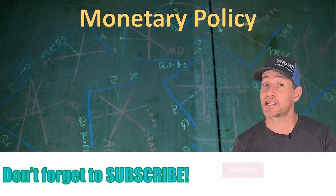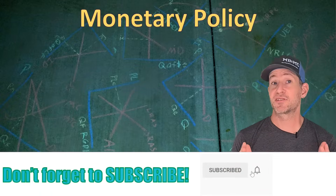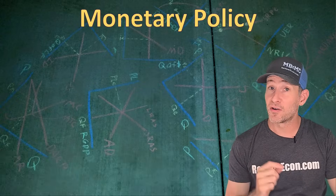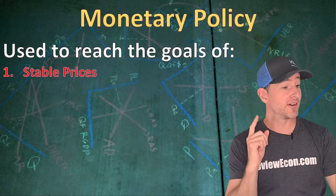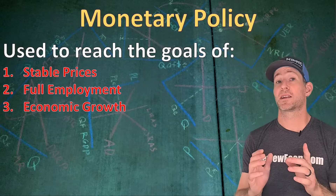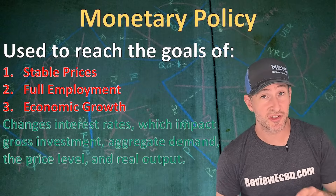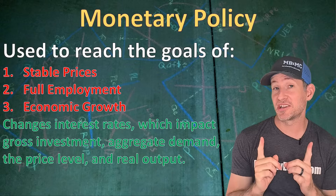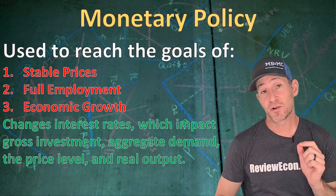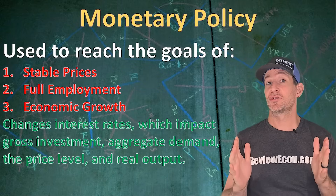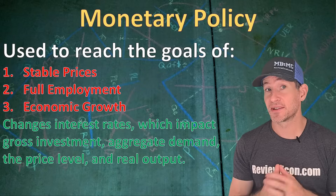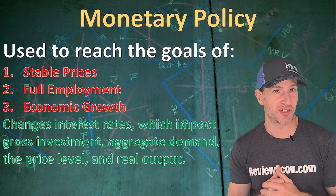First we're going to talk about monetary policy and what it's for. Central banks throughout the United States use monetary policy to achieve three goals: stable prices, full employment, and economic growth. Monetary policy is used to change interest rates, which change gross investment, and with that change in gross investment, aggregate demand shifts in the AS-AD model, changing the price level and real output. This is true both for scarce reserves and ample reserves — central banks in both systems target interest rates to make these changes.